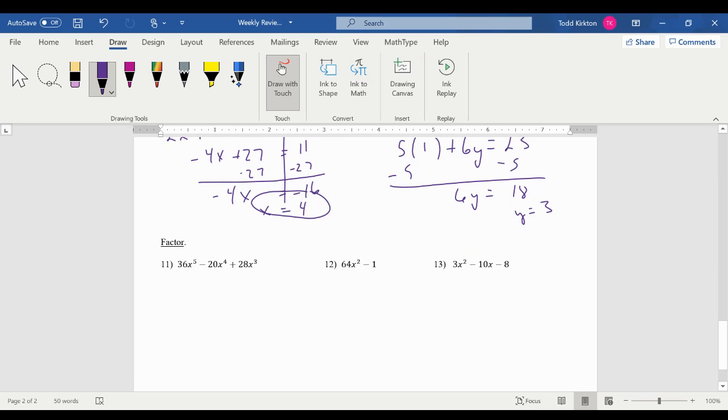Factor. That's what we've been working on the most. Looking at three terms with all those powers, I know I'm going to try to take a GCF out. It looks like 4 goes into all of those numbers. And x to the third leaves me with 9x squared minus 5x plus 7. And if I want to do this completely, I'm going to check and see if I use 3x and 3x and 7 and 1. Is there any way I can come up with 5? That's not going to happen.